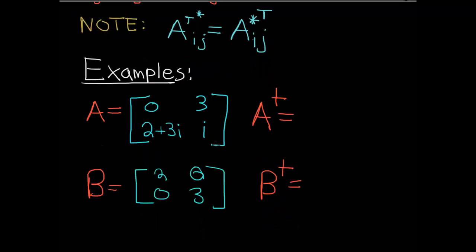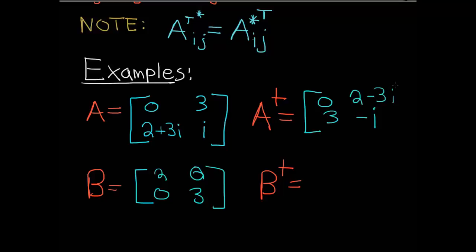Let's look at a simple example. We have matrix A with components 0, 3, 2+3i, and i. So A Hermitian conjugated: doing the transpose first, 0 stays, i becomes negative i (the transpose and complex conjugate result in negative i there), 3 transposes here and the conjugate does nothing to the real number 3, and then transpose and conjugation sends 2+3i to 2−3i.